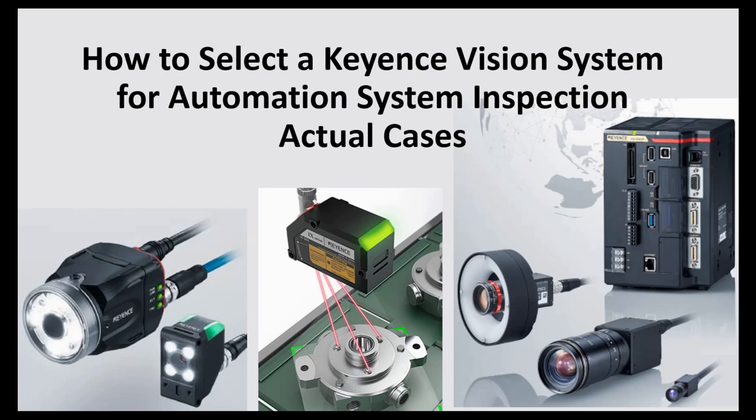In my working area, almost every machine or automation cell needs a vision system to check the quality of products from that cell. The main brand I use is Keyence vision systems or Keyence vision cameras. The main series I use are the IV series, the IX series, and the CVX series.